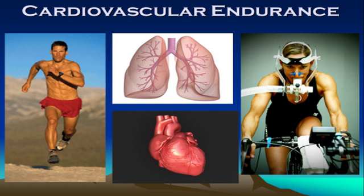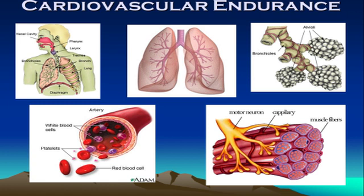Essentially, we're going to take a look at the journey of an oxygen molecule from out in the air to the actual working muscle where it's used, and how we can improve that — that being the main factor of cardiovascular endurance. So if you have a look at it, these are the kind of steps as a bit of an overview.